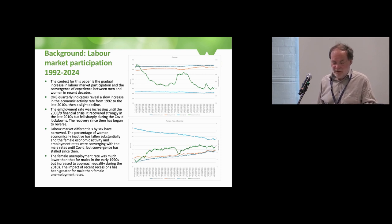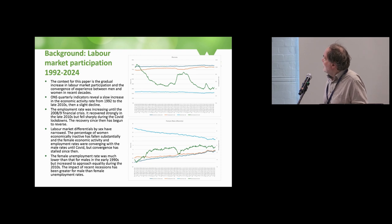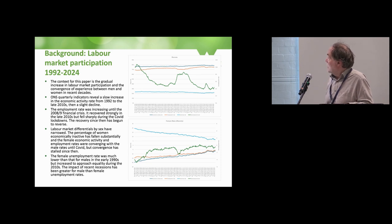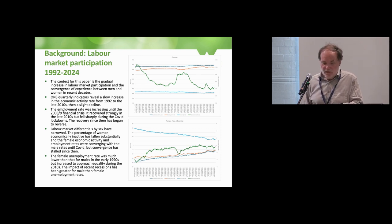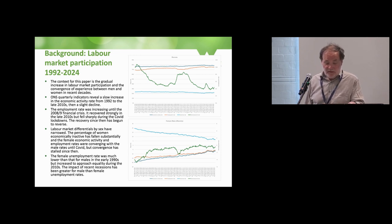This slide just provides the background to the paper in terms of overall labour market participation rates, showing the differences between men and women. The top chart shows participation rates by men and females — a slow increase in participation for women, a slow increase in the overall economic activity rate, and the effect of the decline in employment rates from 1992 onwards until the financial crisis and then COVID.